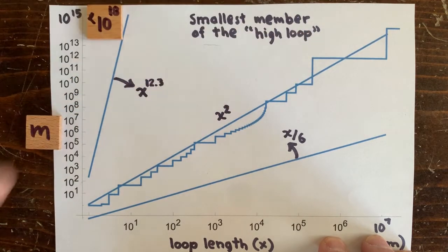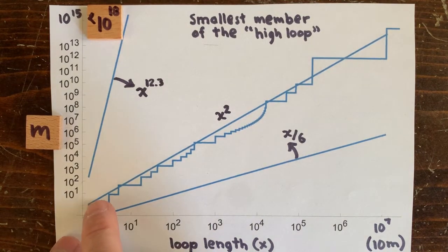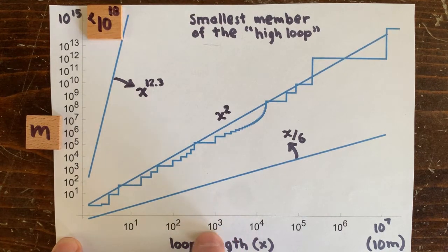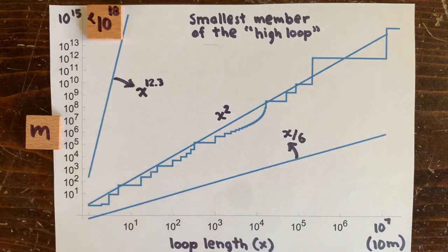So this is a far cry from proving what looks pretty obvious, which is that the highest high loops are generally around x squared. Like the highest loop near length 1000 will have all of its members greater than a million. That was a good episode. See you next time.